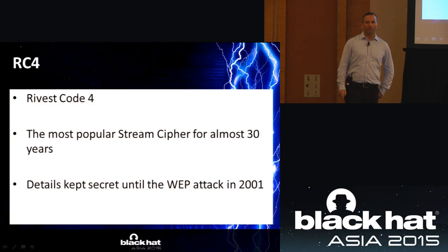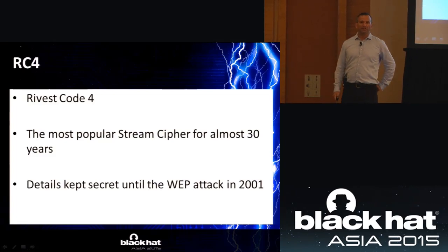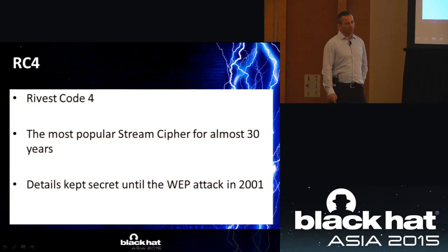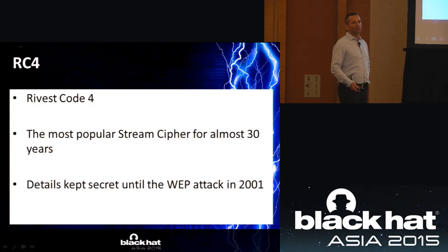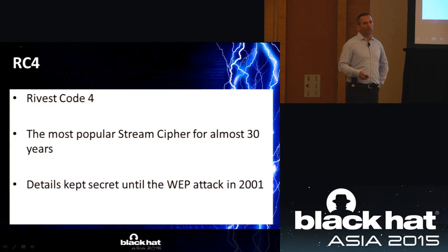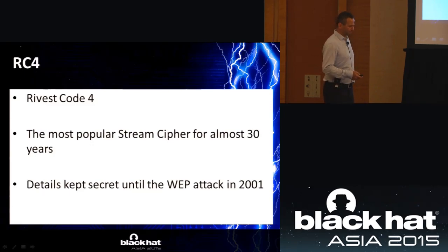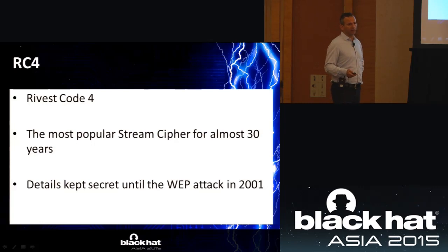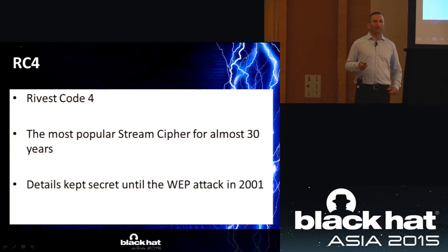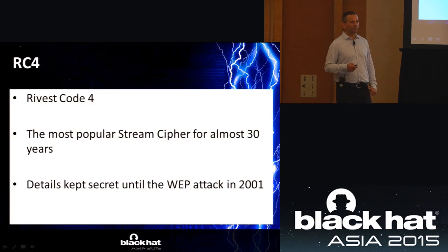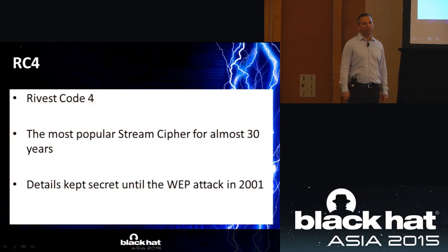RC4 is short for Rivest Cipher 4 — there are also RC2, RC5, and RC6. For about 30 years it has been the most popular stream cipher in the world. The details of RC4 were kept as a trade secret of RSA until 2001, when a practical attack on the WEP protocol was published, and RSA had to admit that this was indeed the algorithm and that it was problematic in the WEP protocol.